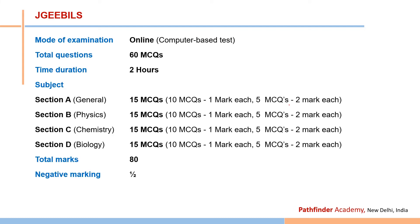For the Joint Graduate Entrance Examination for Biology and Interdisciplinary Life Sciences (JGEEBILS), the exam is computer-based with only 16 questions and a duration of two hours. There are four sections: Section A from General Science, Section B from Physics, Section C from Chemistry, and Section D from Biology. Each section has 15 questions — 10 MCQs of 1 mark each and 5 MCQs of 2 marks each — totaling 80 marks, with half-mark negative marking.